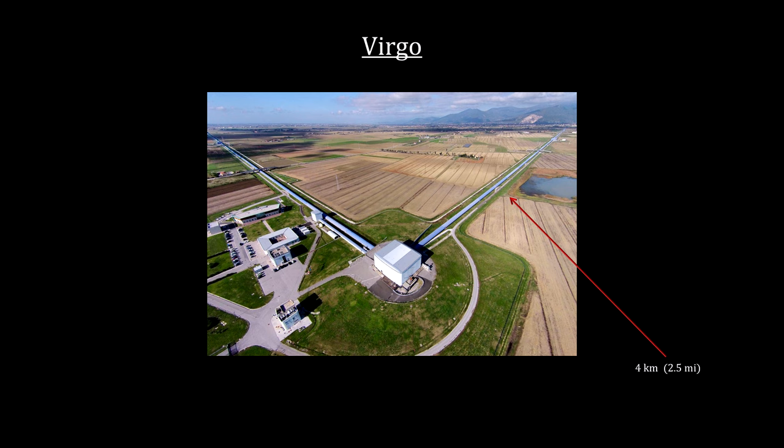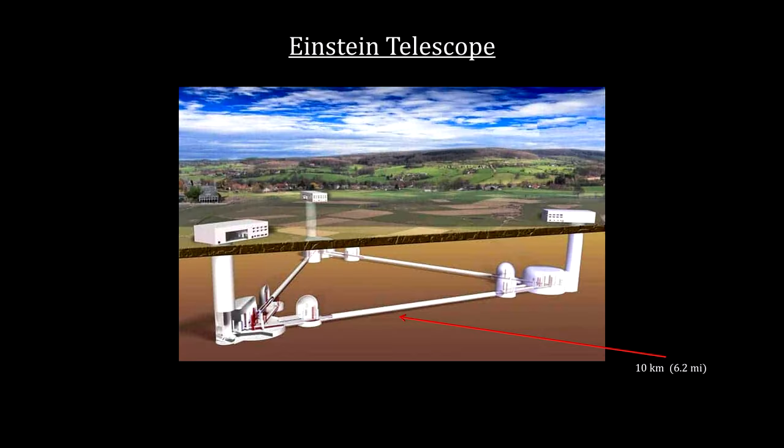Newer, larger Earth-based interferometers are in design and development. One is the Einstein Telescope. It will be underground, with an arm length of 10 kilometers, that's 6.2 miles. Construction could begin as early as 2026, with the goal to start observations in 2035.